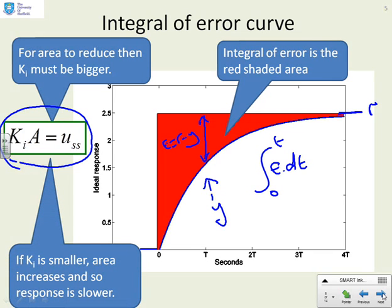Or conversely, if ki is smaller, you choose a smaller value for the integral gain, then that area of the error curve must get bigger. And if that area is getting bigger, that means the response is getting slower.